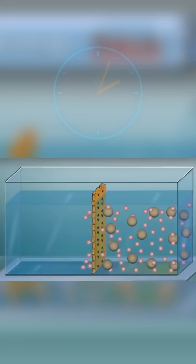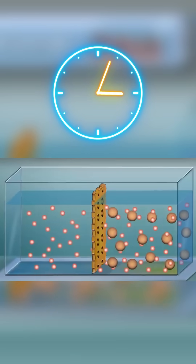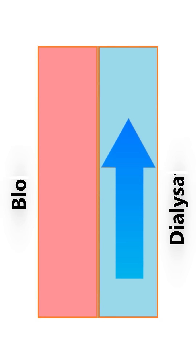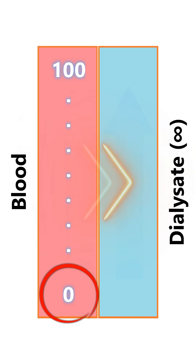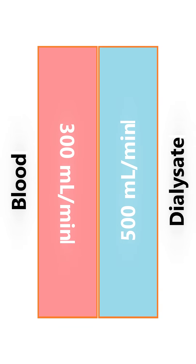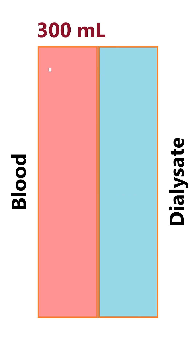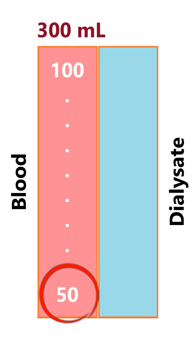Now let's move on to the dialyser's logic. Diffusion is time dependent — if time and dialysate flow were infinite, almost all the blood entering the dialyser would be completely cleared, provided the molecule can freely diffuse. But in real life, with a typical blood flow of 300 and dialysate flow of 500 ml per minute, if 300 ml of blood enters carrying 100 units of toxin, usually only about 50% is removed.